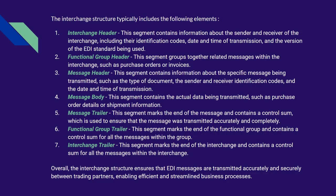The interchange structure typically includes the following elements. Interchange Header: This segment contains information about the sender and receiver of the interchange, including their identification codes, date and time of transmission, and the version of the EDI standard being used.